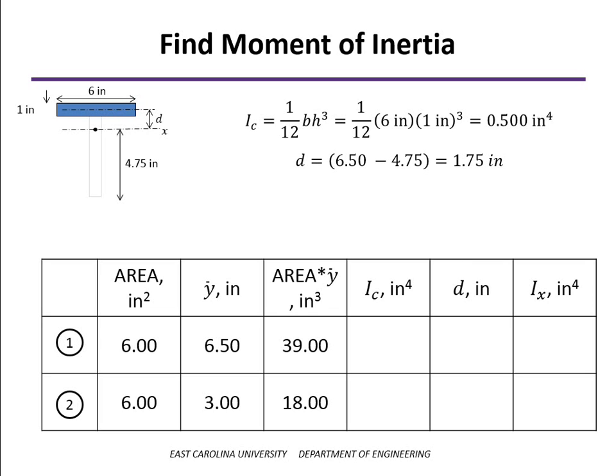d, the distance between the axis passing through the centroid of the entire cross section and the axis passing through the centroid of the rectangle, is our y bar value of the individual segment, which is 6.5, minus y bar of the entire section, which is 4.75. That difference is 1.75 inches.